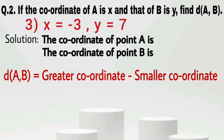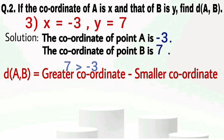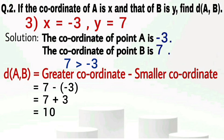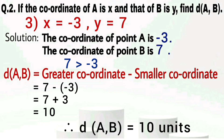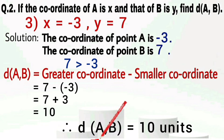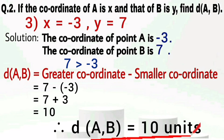The third case: X equals minus 3 and Y equals 7. The coordinate of point A is minus 3 and the coordinate of point B is 7. Since 7 is greater than minus 3 — because 7 is a positive number — the distance between A and B equals greater coordinate minus smaller coordinate: 7 minus (minus 3). Minus minus becomes plus, so 7 plus 3 equals 10. Therefore the distance between A and B is 10 units.